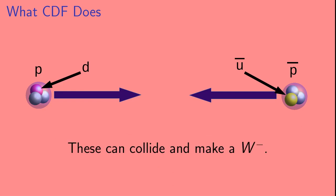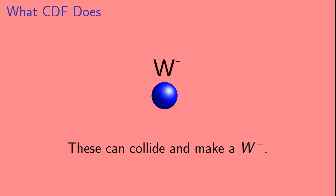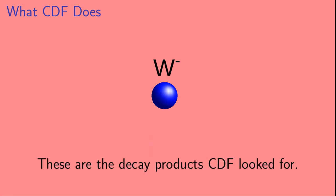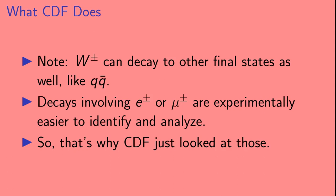So when the proton and antiproton collide, the quarks they contain can collide and produce a W-, which will then decay. We saw that possible decays included the W- going to an electron and an electron anti-neutrino, or the W- going to a muon and a muon anti-neutrino. These are the decay products that CDF looked for. So an electron and its anti-neutrino, or a muon and its anti-neutrino. We should point out here that the W can decay into other final states, like a quark-anti-quark pair. But decays involving electrons or muons are experimentally easier to identify and analyze. So that's why CDF just looked at those.